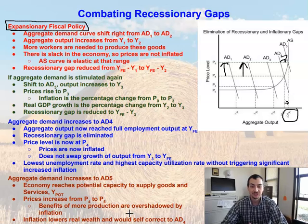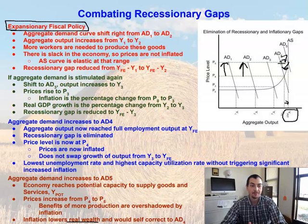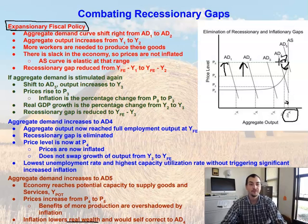The benefits of more production are overshadowed by inflation. Inflation actually lowers our real wealth. And because of that, this is actually going to self-correct back to AD4, because people aren't going to be willing to pay those high prices. It's going to drop back down because our real wealth is being lowered by that inflation.